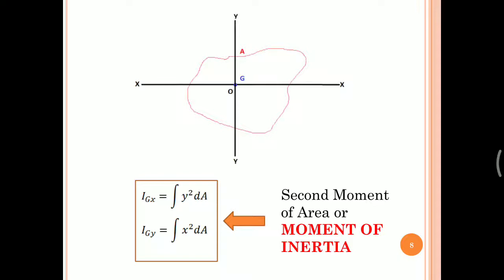Similarly, if we consider an axis y perpendicular to x, this axis should also pass through G. As we can see in the figure, the x and y axes meet at G, meaning the origin and the centroid coincide. The moment of inertia of the area about the y-axis passing through G is represented as Igy, and can be found using integral x² dA, obtained in the same fashion as the previous equation.